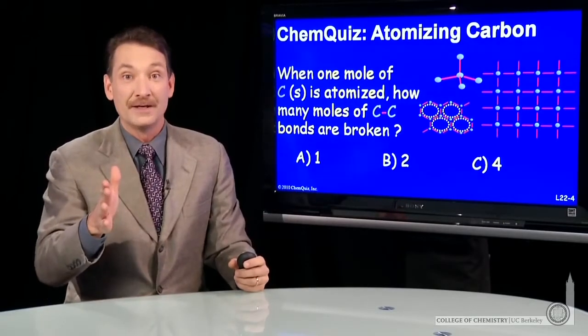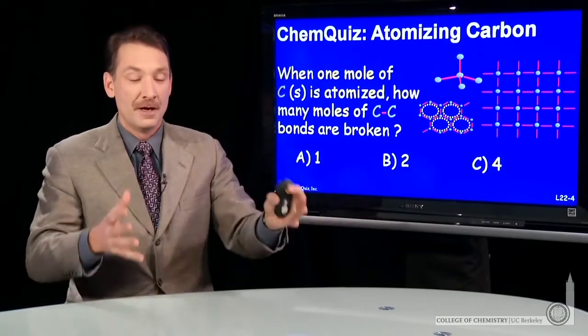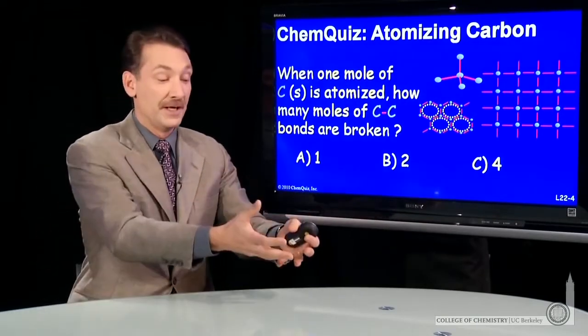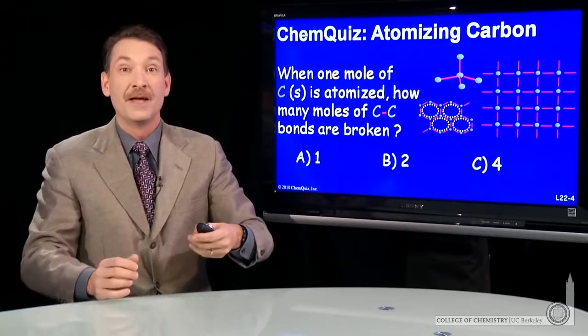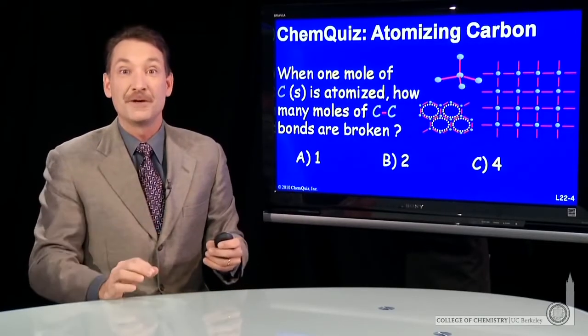Now, if I do that, I have to break carbon-carbon bonds. And the easiest way to think about carbon, although it has several forms, the diamond and the graphite, it's easy to think of carbon bonded to four other carbons, sp3 hybridized.